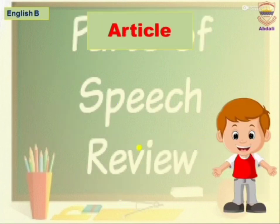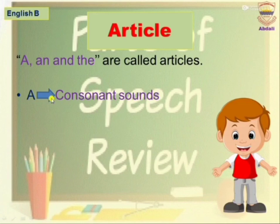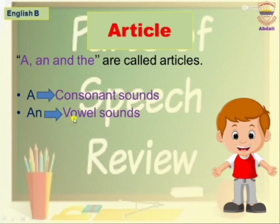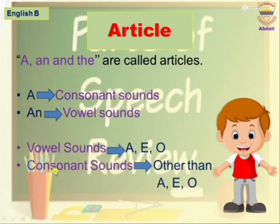Article. A, An, and The are called articles. A is used with consonant sounds. An is used with vowel sounds. Vowel sounds are A, E, I, O, U, and consonant sounds are all others. I am talking about sounds, not words.